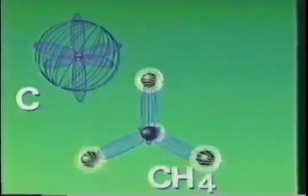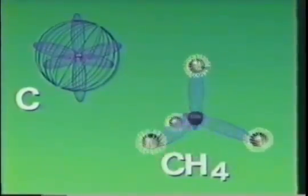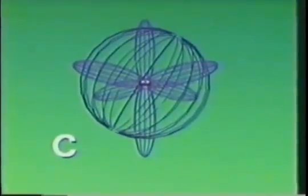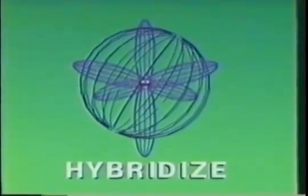Yet, when carbon bonds with hydrogen to form methane, empirical evidence insists that all four bonds are of equal energy. The solution to the paradox: save appearances, save the model, and blend or hybridize the orbitals with a jolt of energy.